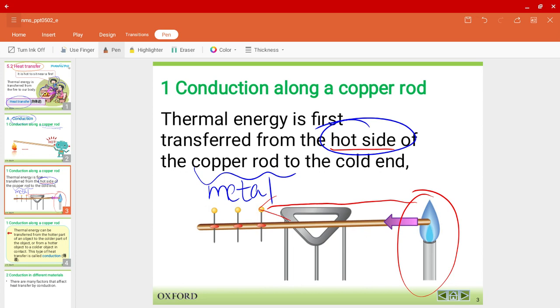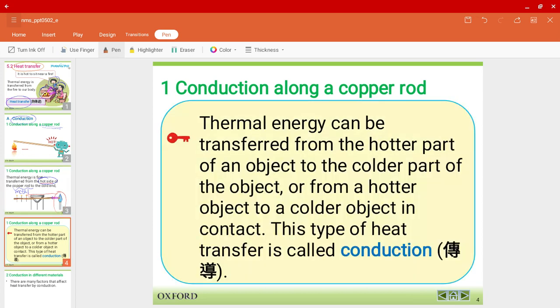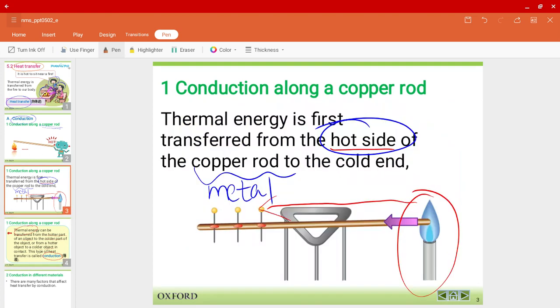Essentially, conduction occurs when thermal energy is transferred from the hotter part of an object to the colder part, or from a hotter object to a colder object. This is what we call the process of conduction. Very simple. Conduction is when thermal energy moves or is transferred from the hot end to the colder end.